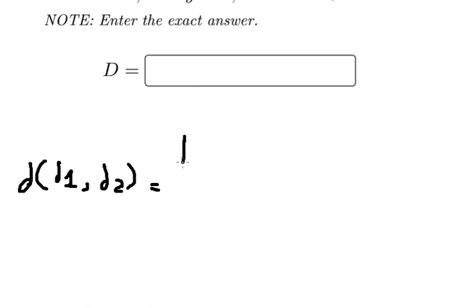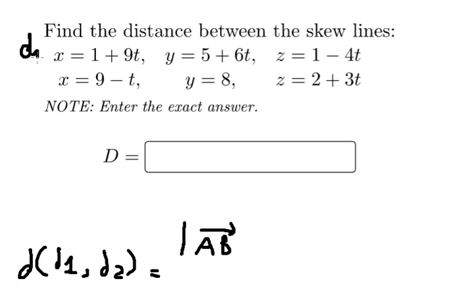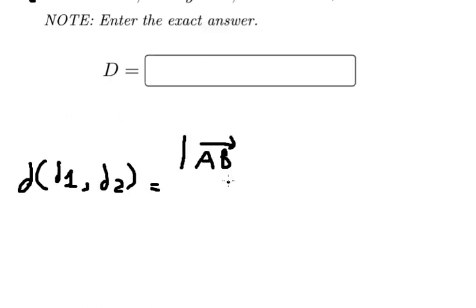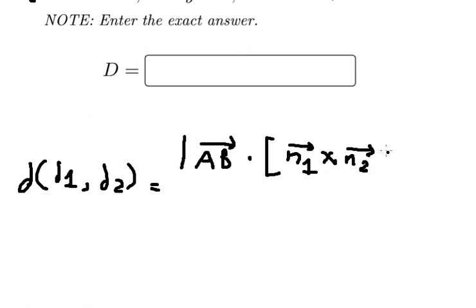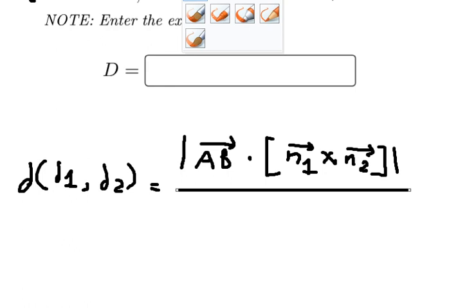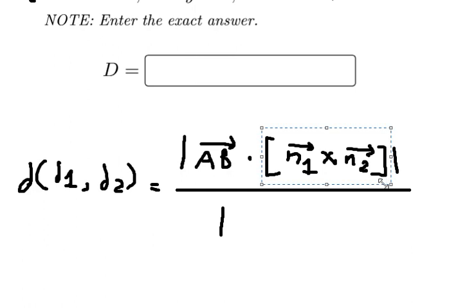We have the absolute value of vector AB — where point A and point B are on line d1 and line d2 — dot producted with the cross product between the normal vectors n1 and n2, over the absolute value of the cross product between vector n1 and n2.